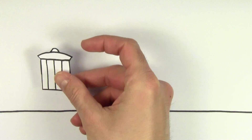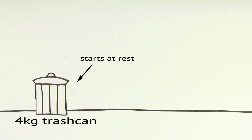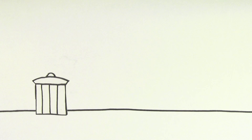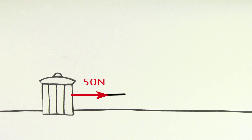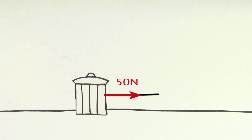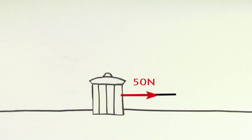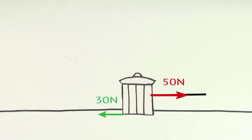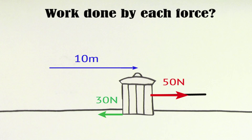I'm going to show you some examples of how to solve problems involving work. Imagine a 4 kilogram trash can. The trash can is disgusting, so someone ties a string to it and pulls on the string with a force of 50 newtons. The force of kinetic friction on the trash can while it slides is 30 newtons. The trash can slides across the ground for a distance of 10 meters. Let's try to find the work done by each force on the trash can as it slides across the ground.